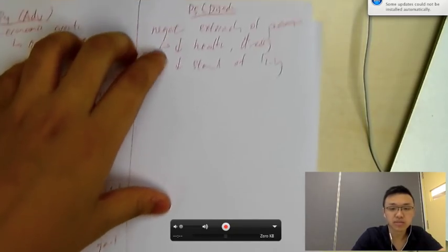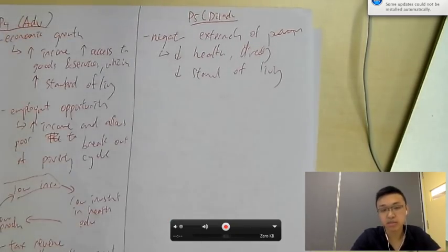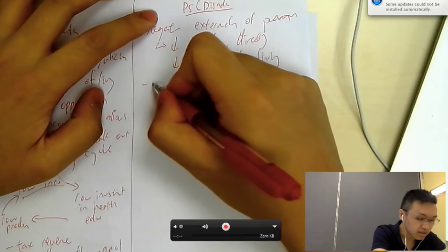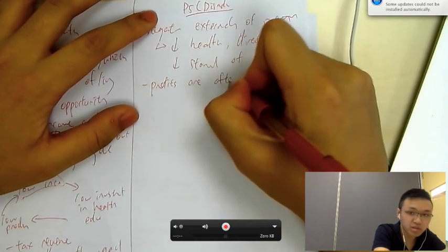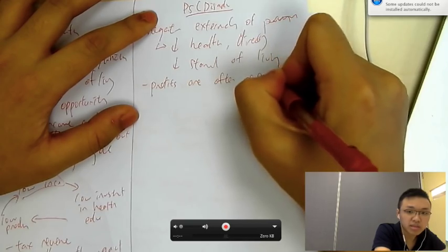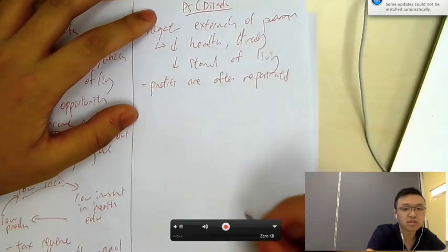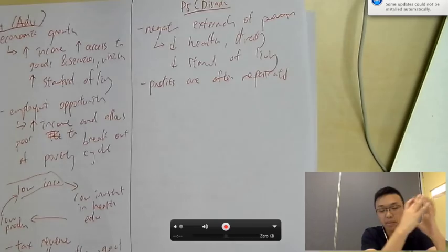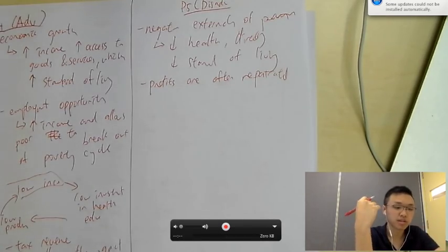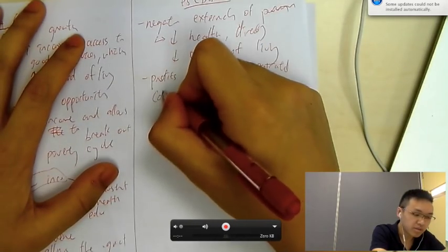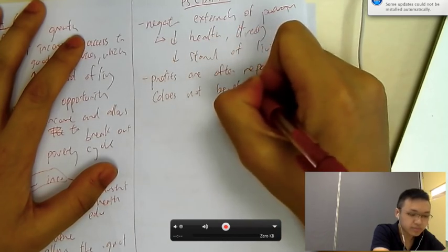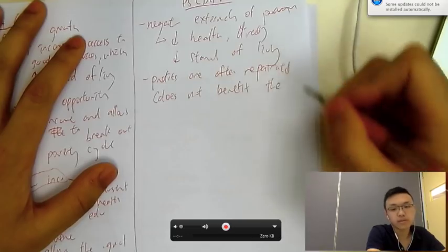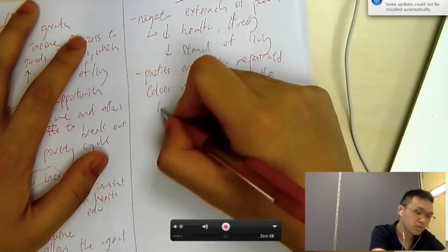And then, now, let's move on to the disadvantage. Negative externalities production, that's a big one. Another one is, you can say, profits are often repatriated. So, what does it mean by repatriated? Repatriated basically means sent abroad. Profits are sent abroad. So, when the MNC makes profit, they just send it back to their home country. So, if they are repatriated, it does not benefit the locals, right?